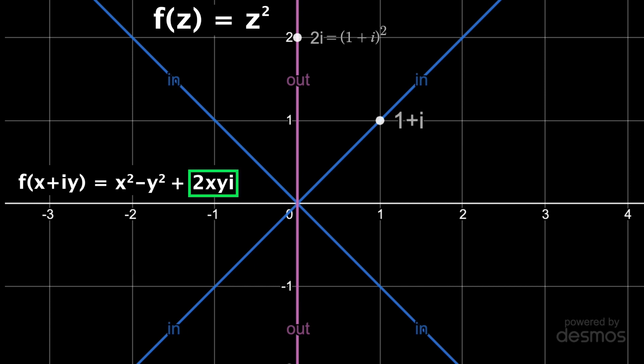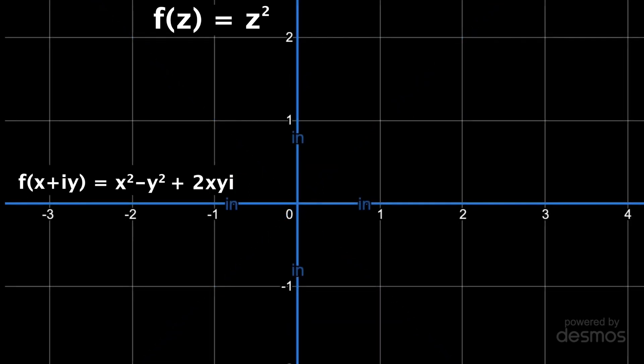Then from this imaginary component it's easy to see that it will be 0 if x and or y equals 0. So let me show those equations are really the two axes in blue because now we know any inputs on those lines will output something on the real axis where there's no imaginary component. The easiest example of this is the fact that i squared is negative 1.